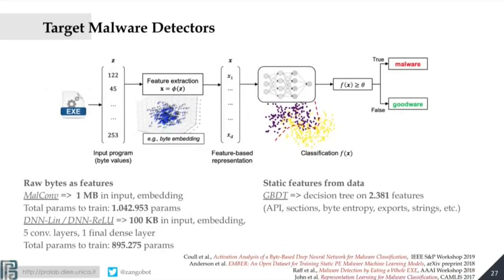Let's deep dive into some results. We use SecML malware with all the complicated things I just described, and attack some detectors — in particular, four different kinds. This is basically the pipeline of a malware detector: we have the input program as bytes — each byte a value from 0 to 255 — some feature extraction, a feature vector, then the model, which classifies according to a threshold to produce a malware or goodware class.